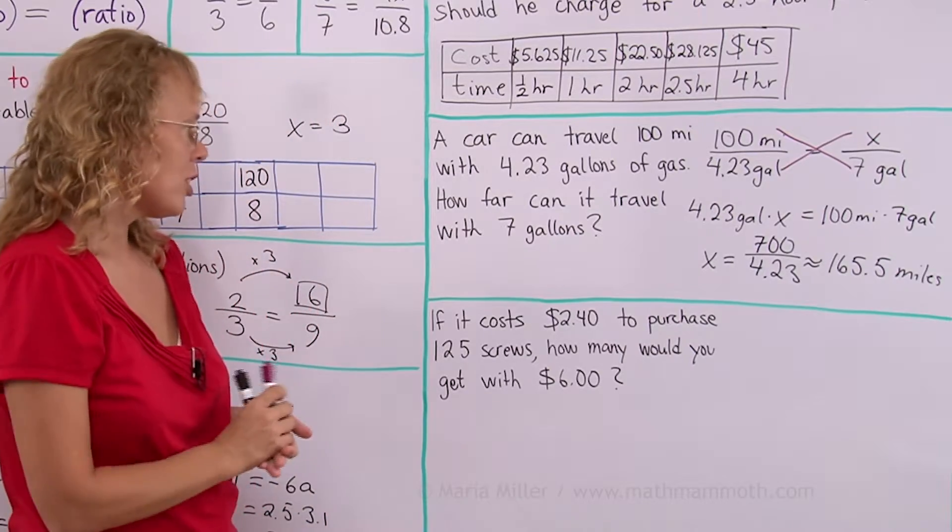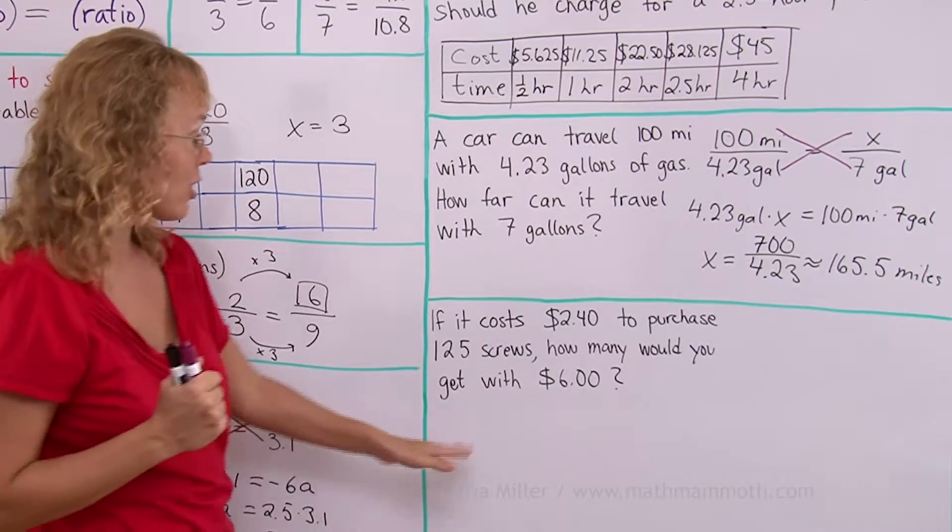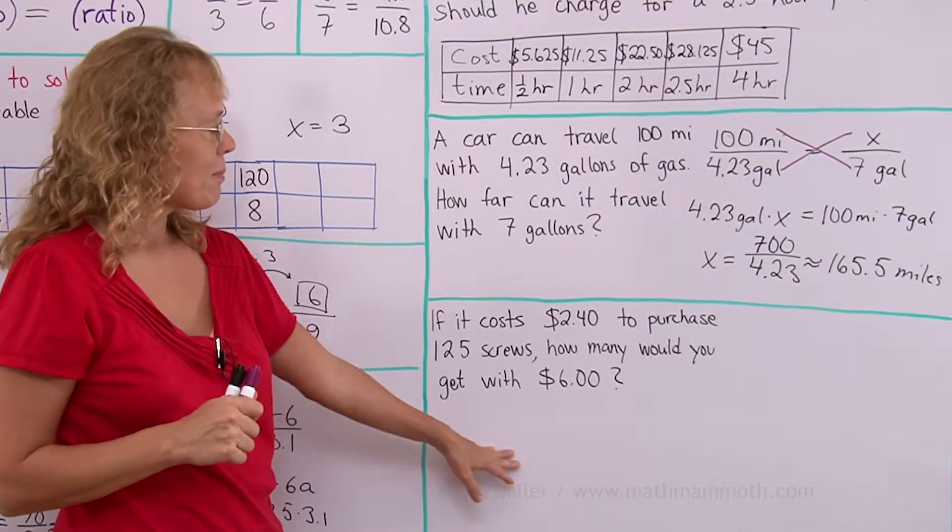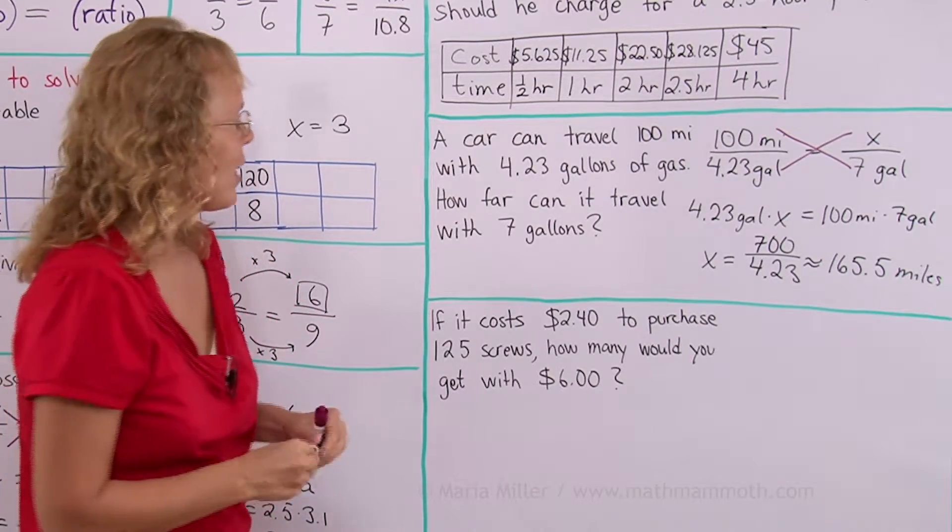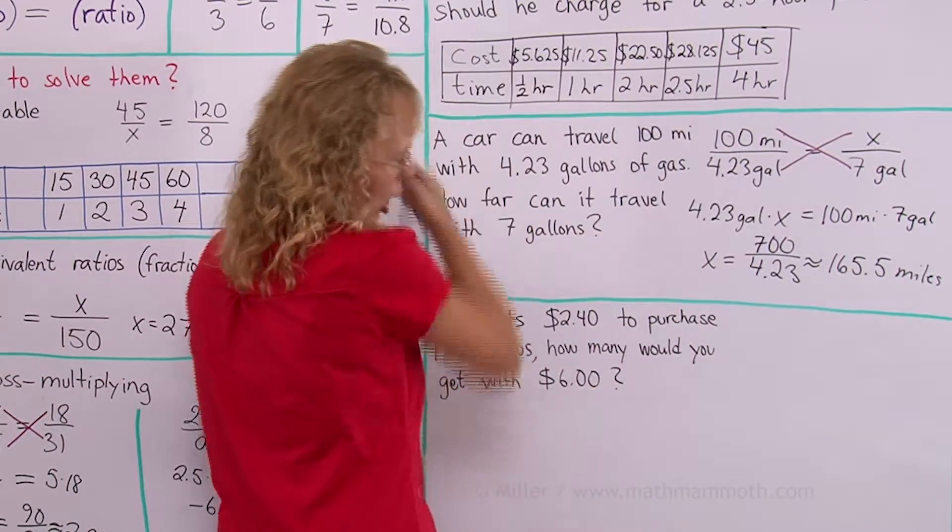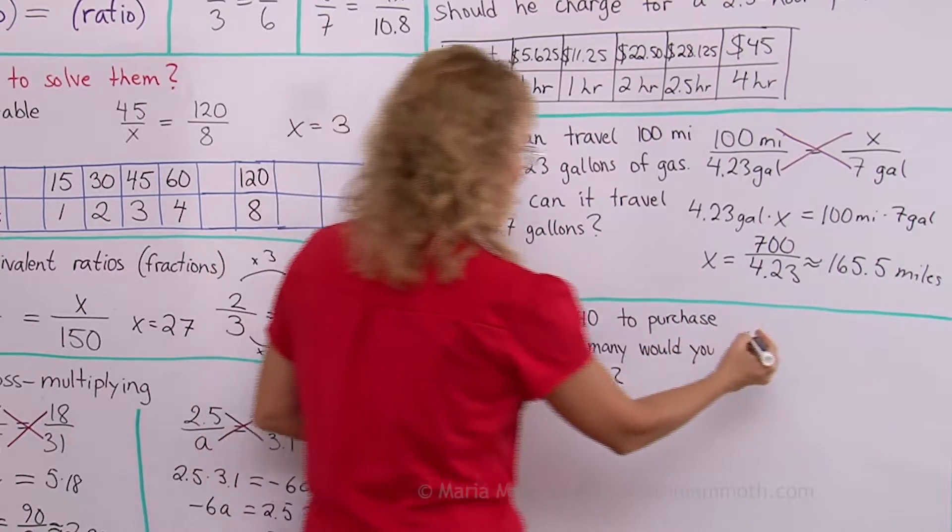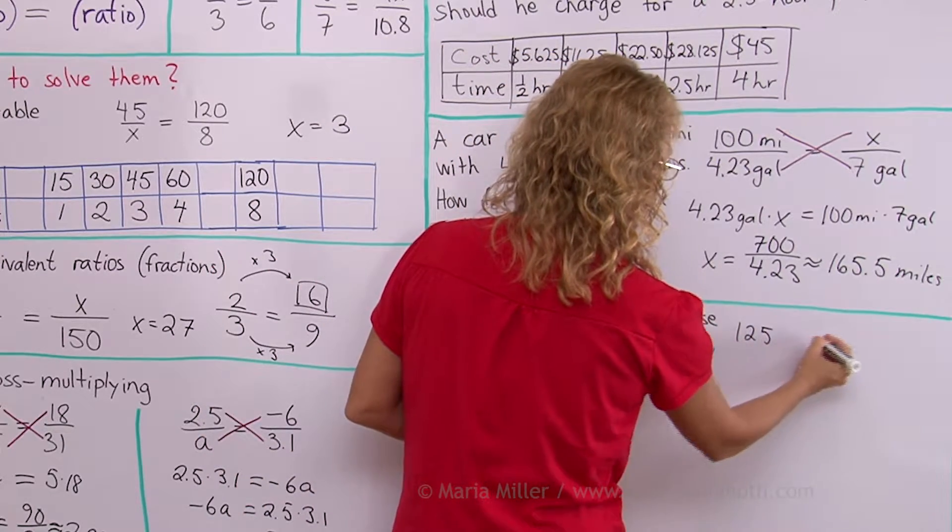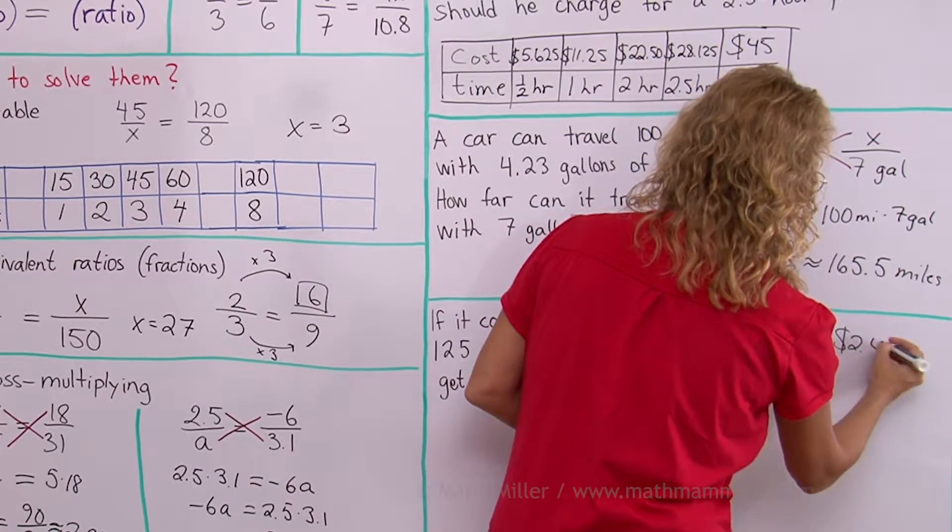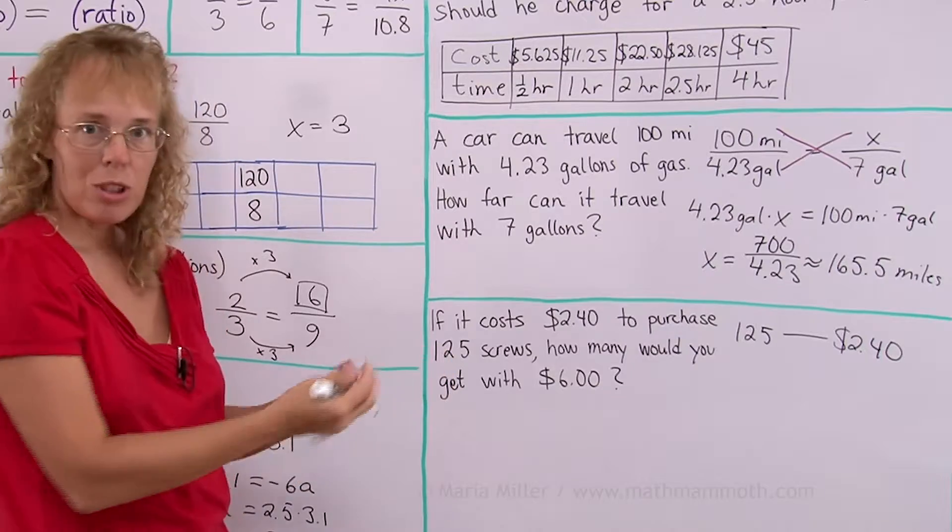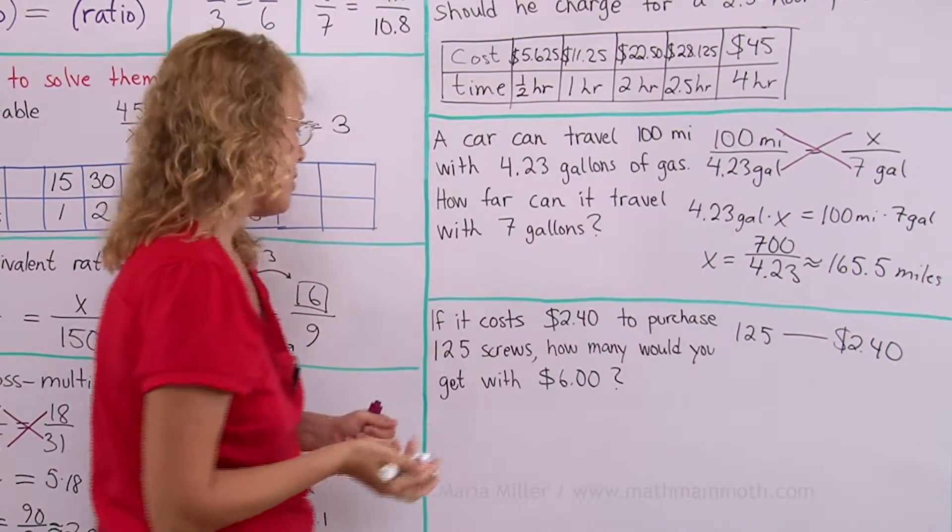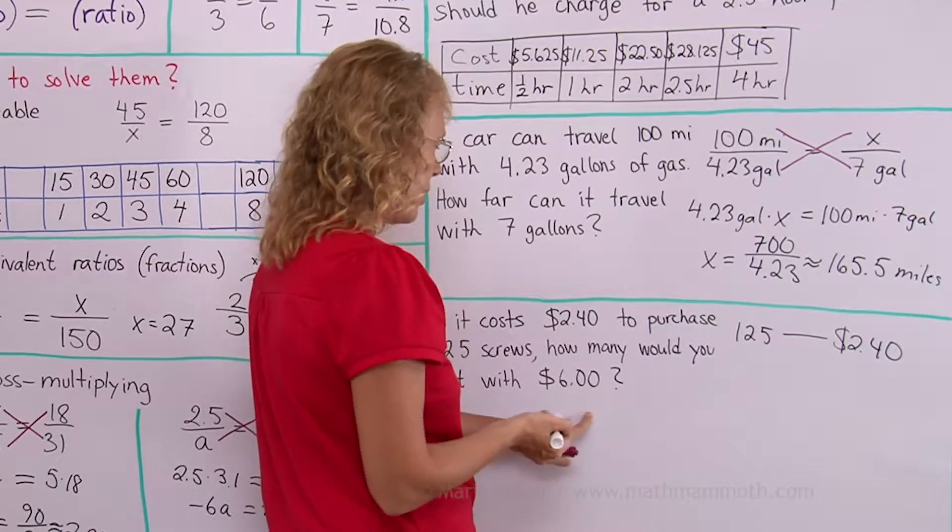Lastly if it cost $2.40 to purchase 125 screws how many would you get with $6? This I'm gonna solve in two different ways. One way is kind of like the table but I'm gonna go this way instead of horizontally. Let's say that we have 125 screws and that is $2.40. That corresponds with $2.40. That's what this line is meaning.